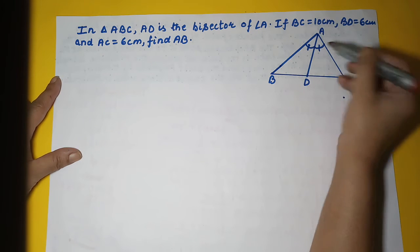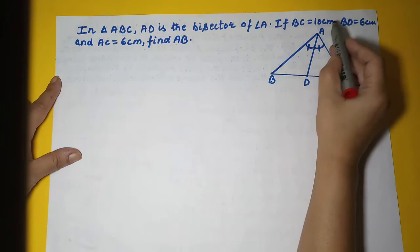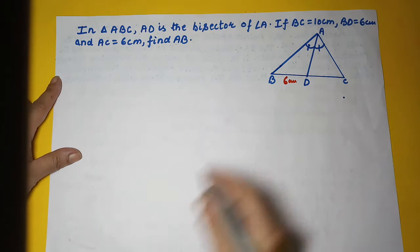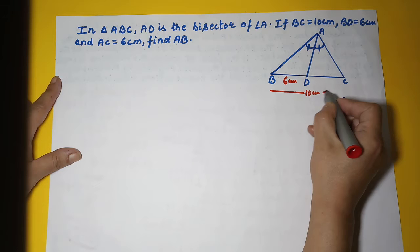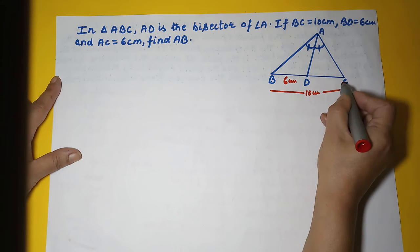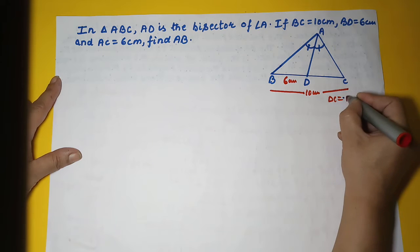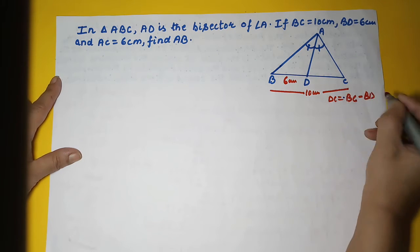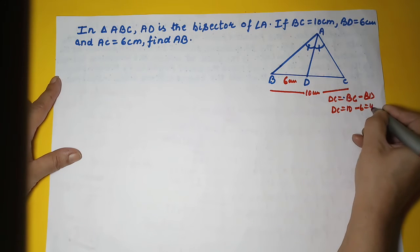It divides angle A into two equal parts and BC is given 10 centimeters and BD is given 6 centimeters. So we can calculate DC as BC minus BD. So DC will be 10 minus 6, that is 4 centimeters.